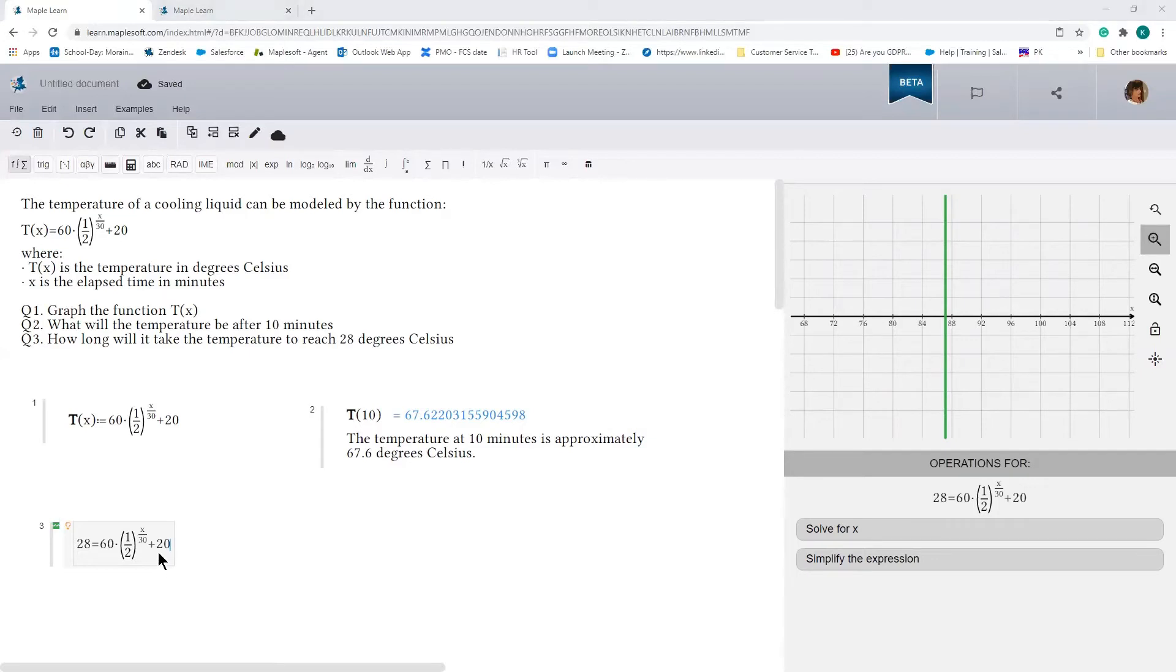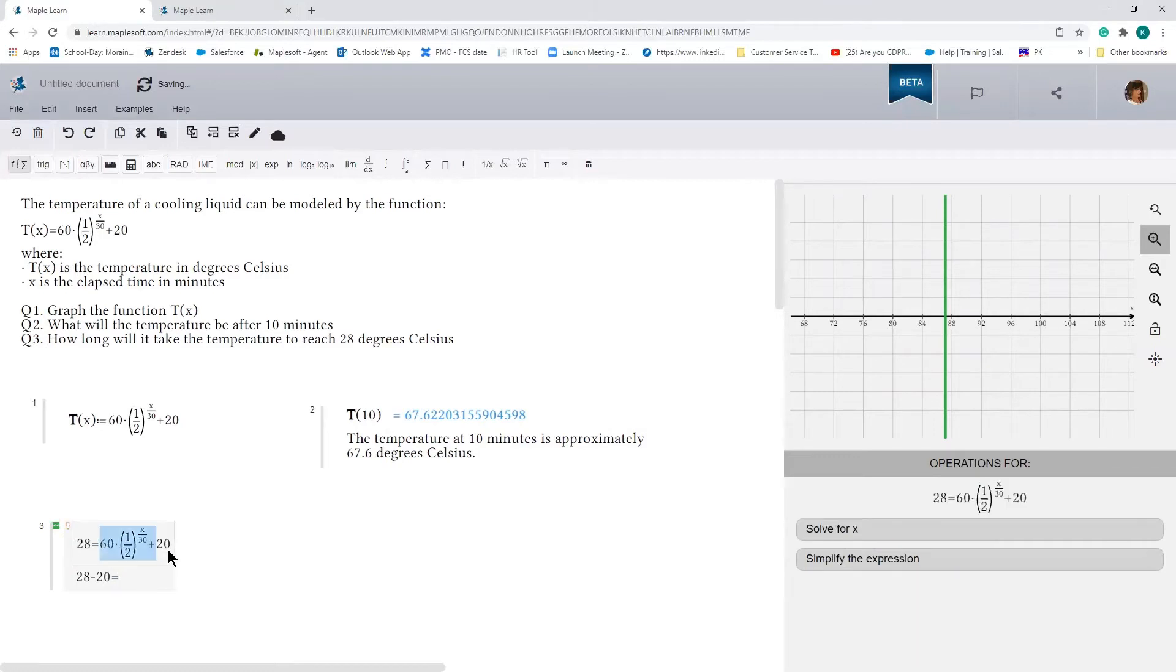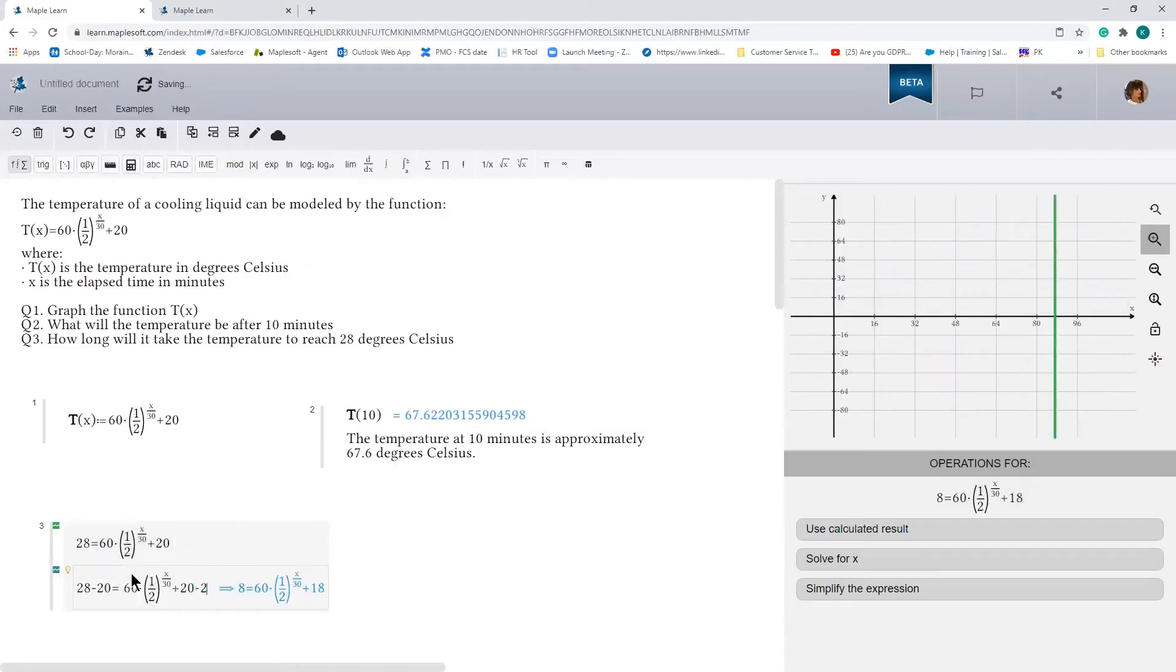So now, in order to solve this problem, we're going to need to subtract 20 from both sides. So let's do that. We have 28 minus 20. Just make life easier by copying the right hand side. Subtract 20.